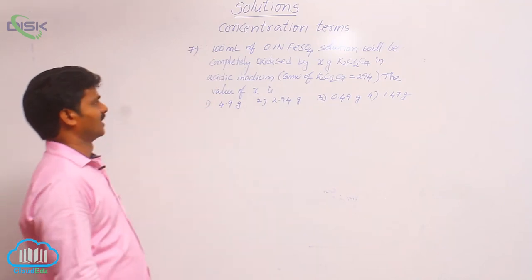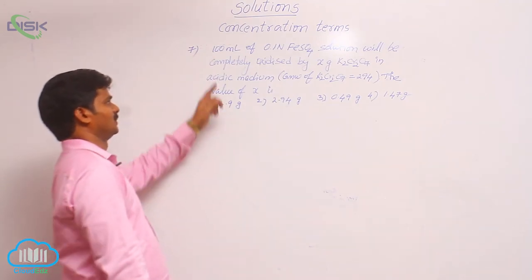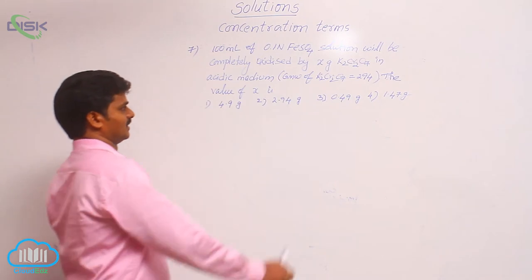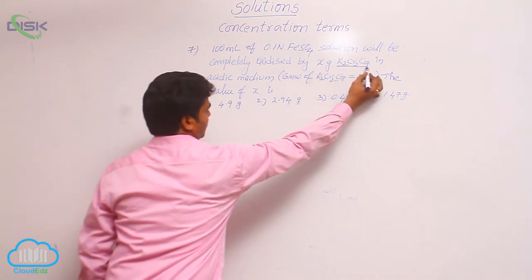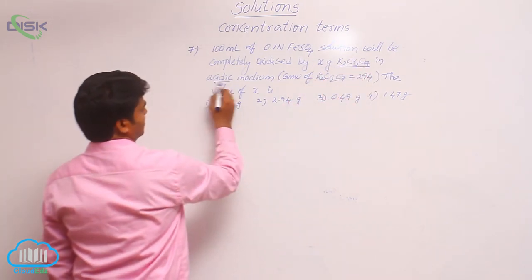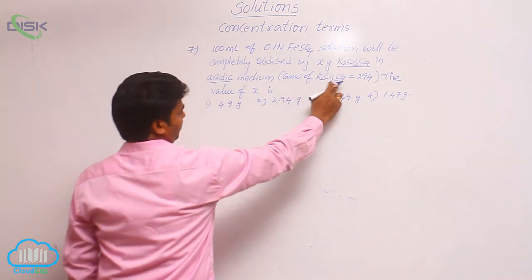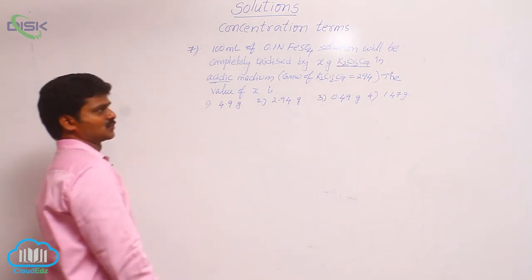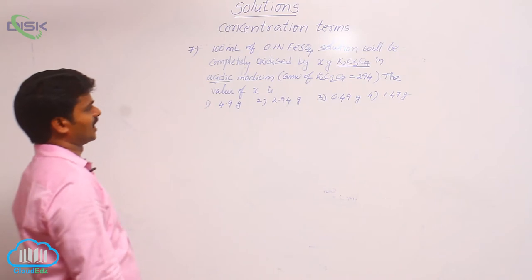100 ml of 0.1 normal FeSO4 solution will be completely oxidized by x grams of potassium dichromate in acidic medium. The gram molecular weight of potassium dichromate is given as 294. Find the value of x.